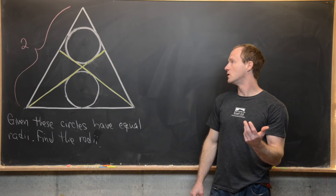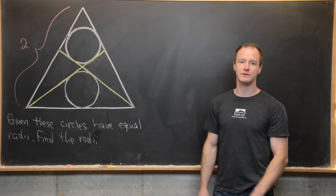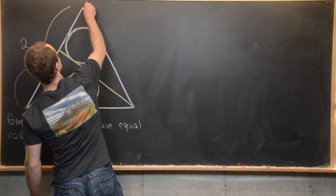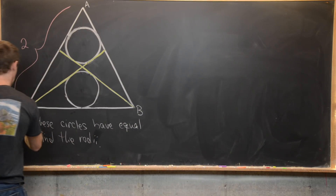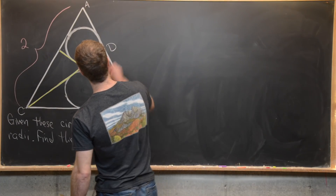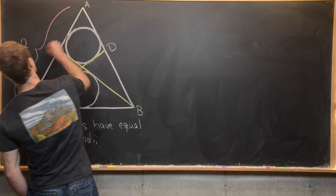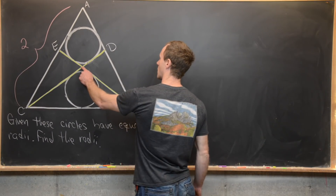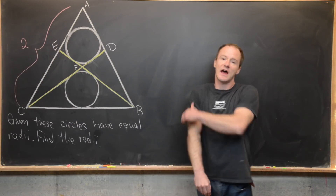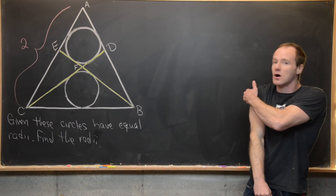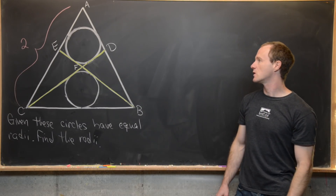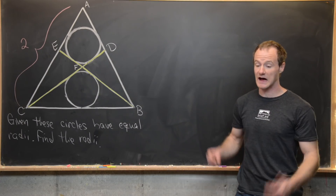First off, we want to introduce some notation for some of the vertices. Let's call this vertex A, this vertex B, and this vertex C. Next we'll call this intersection point D and this intersection point E. Finally, we'll call this intersection point of the two yellow lines F. Now that we have all of those points, let's go ahead and introduce some more line segments.